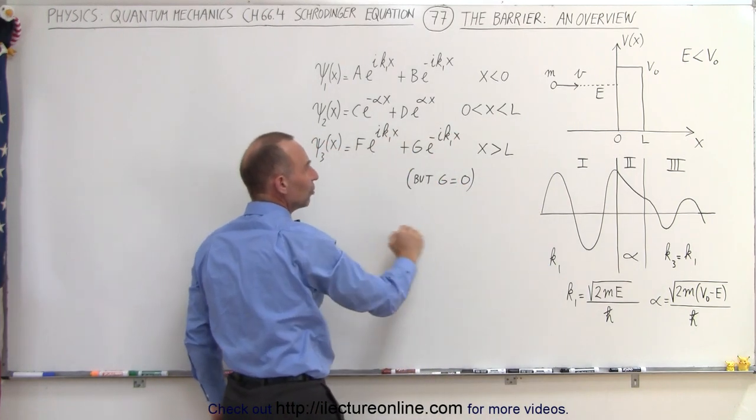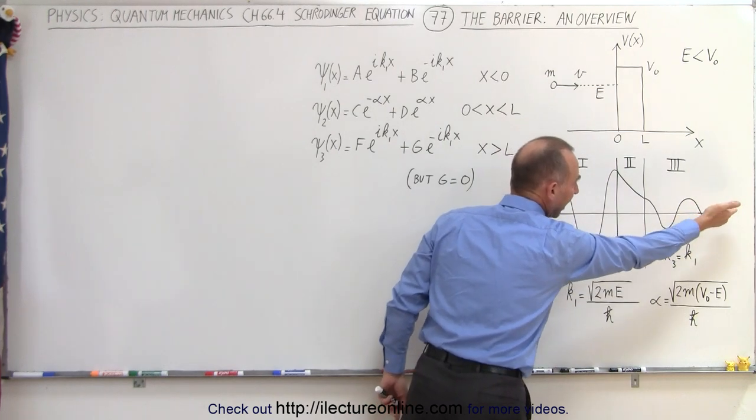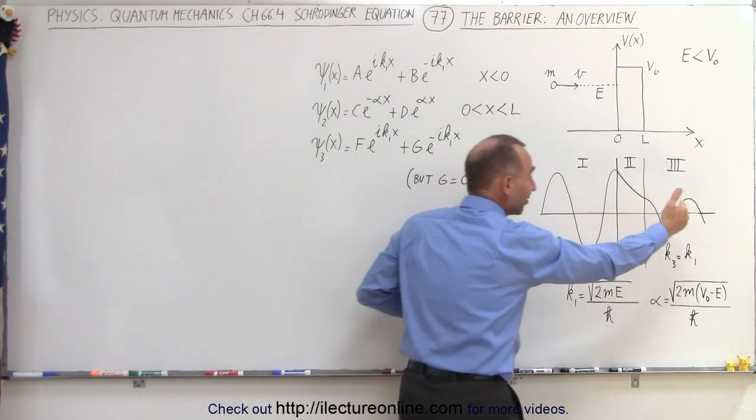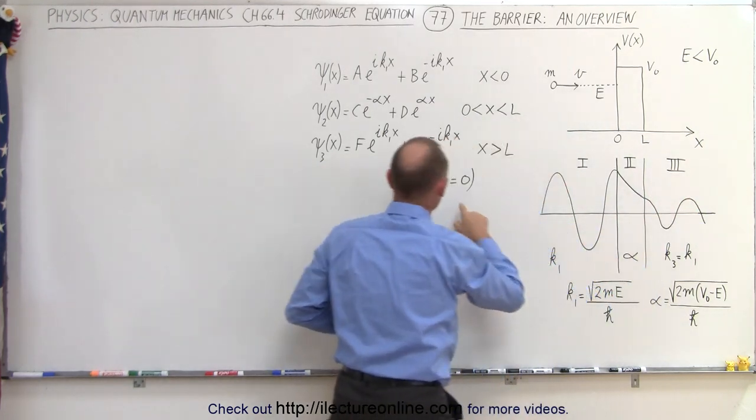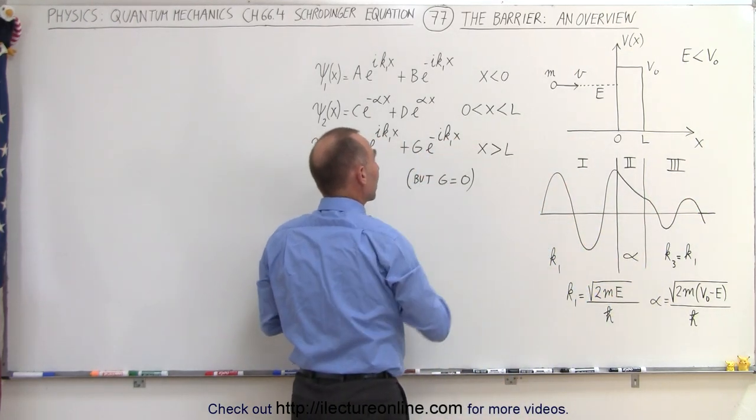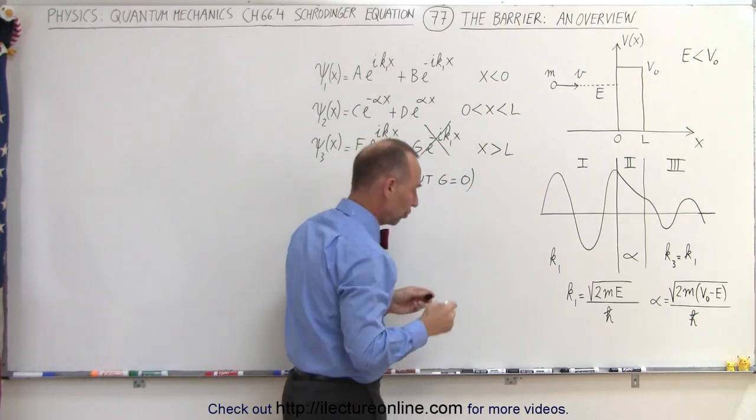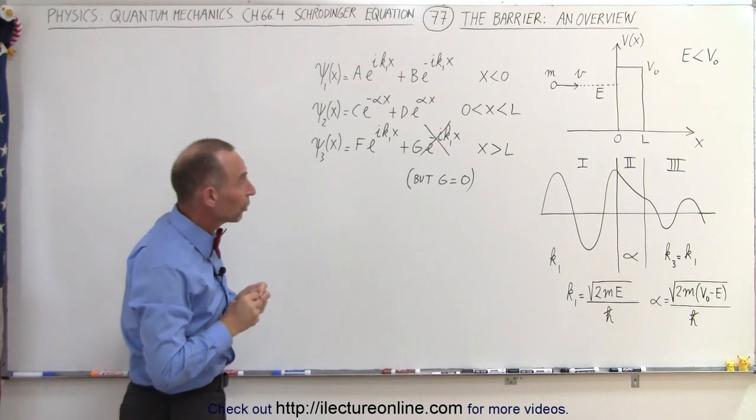And in the third region, we have two terms, one for particles going to the right and one for particles going to the left. But since there's nothing on the right side to make particles reflect, g, the coefficient in front of this term right here, is equal to zero. So essentially, we do not have this term in region 3. This simply goes to zero.